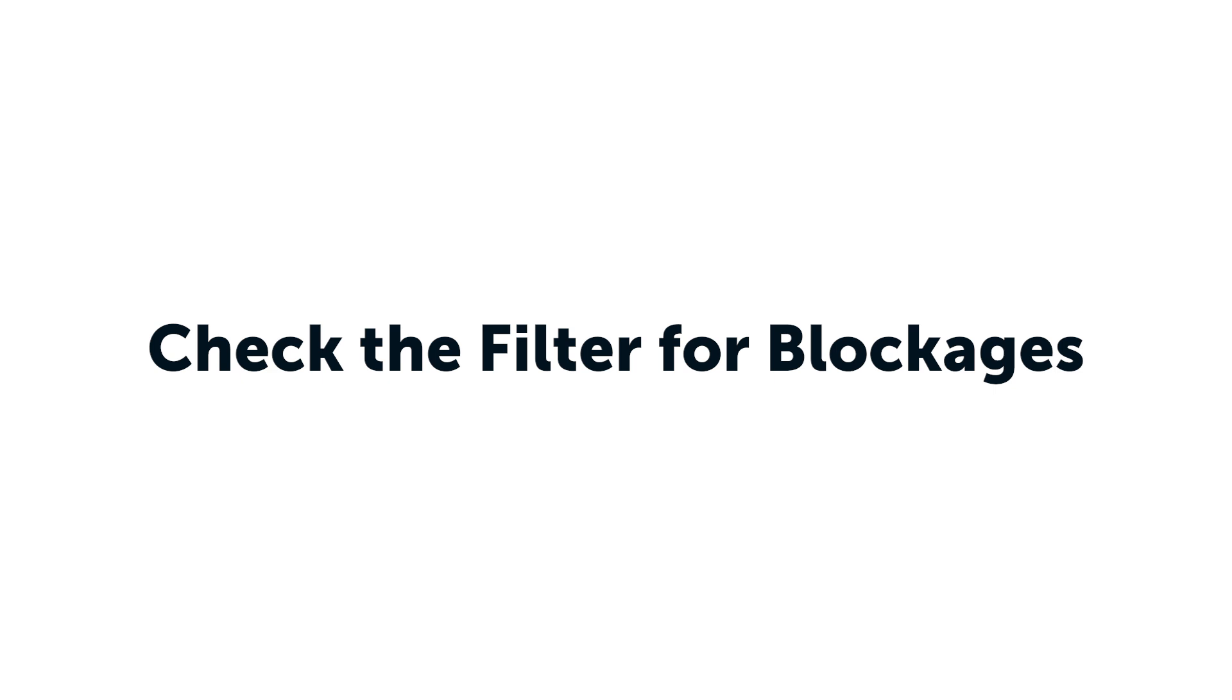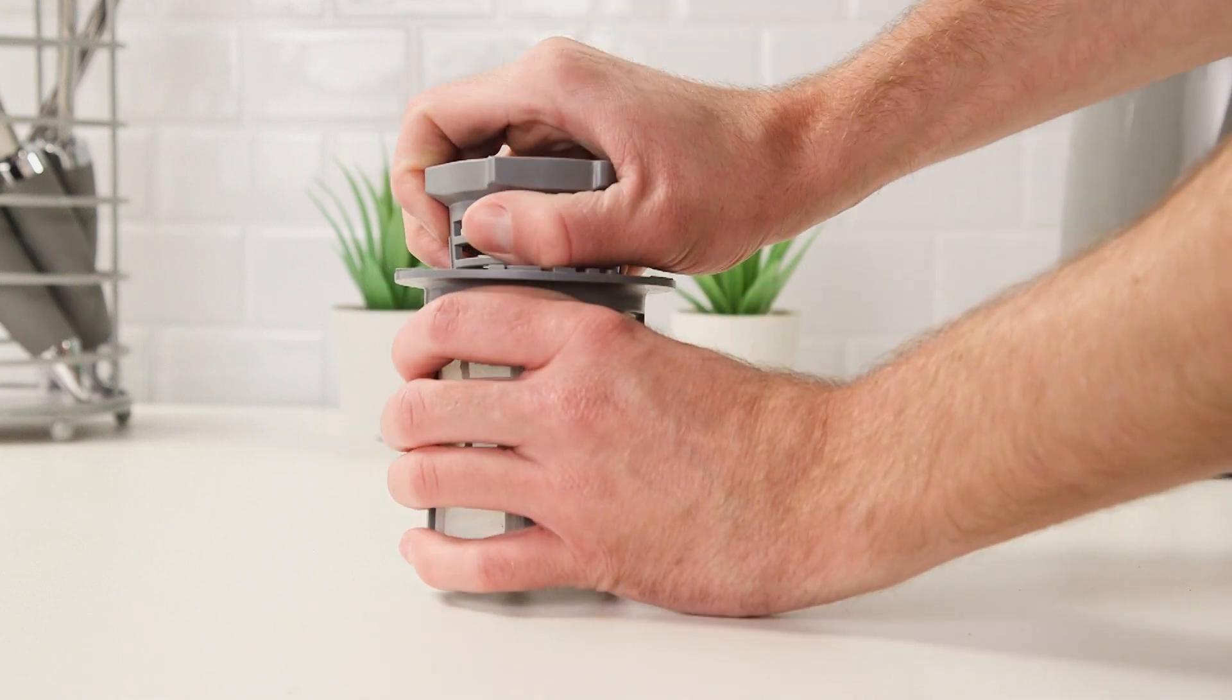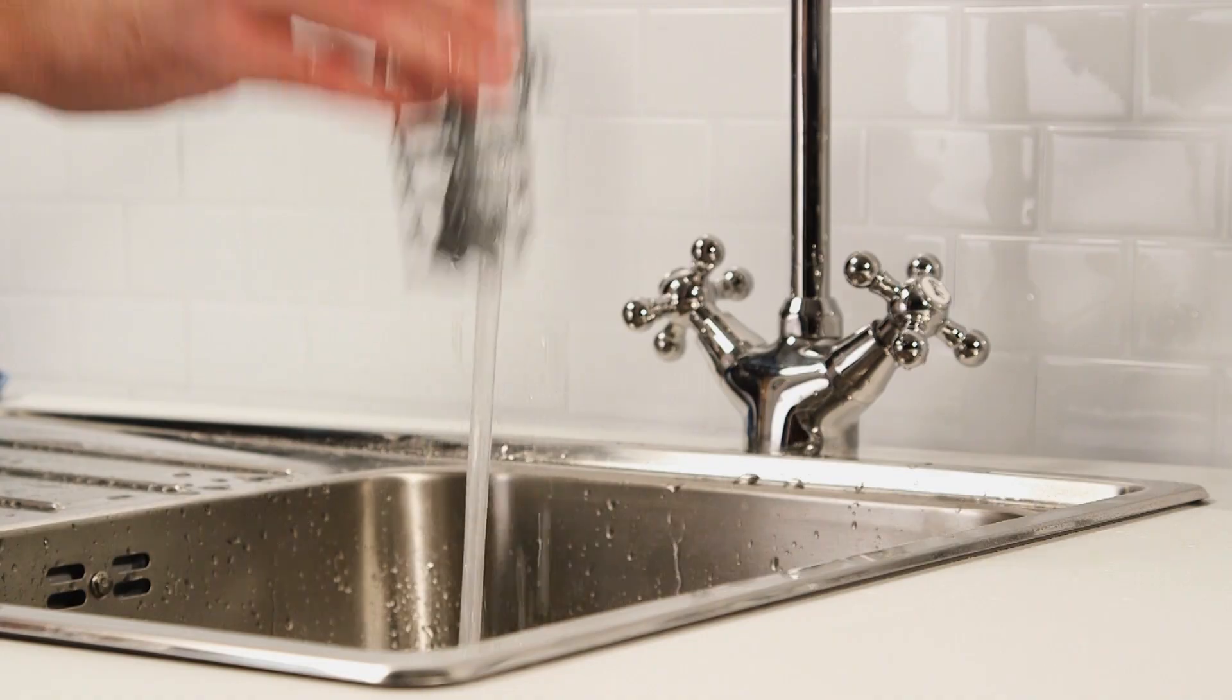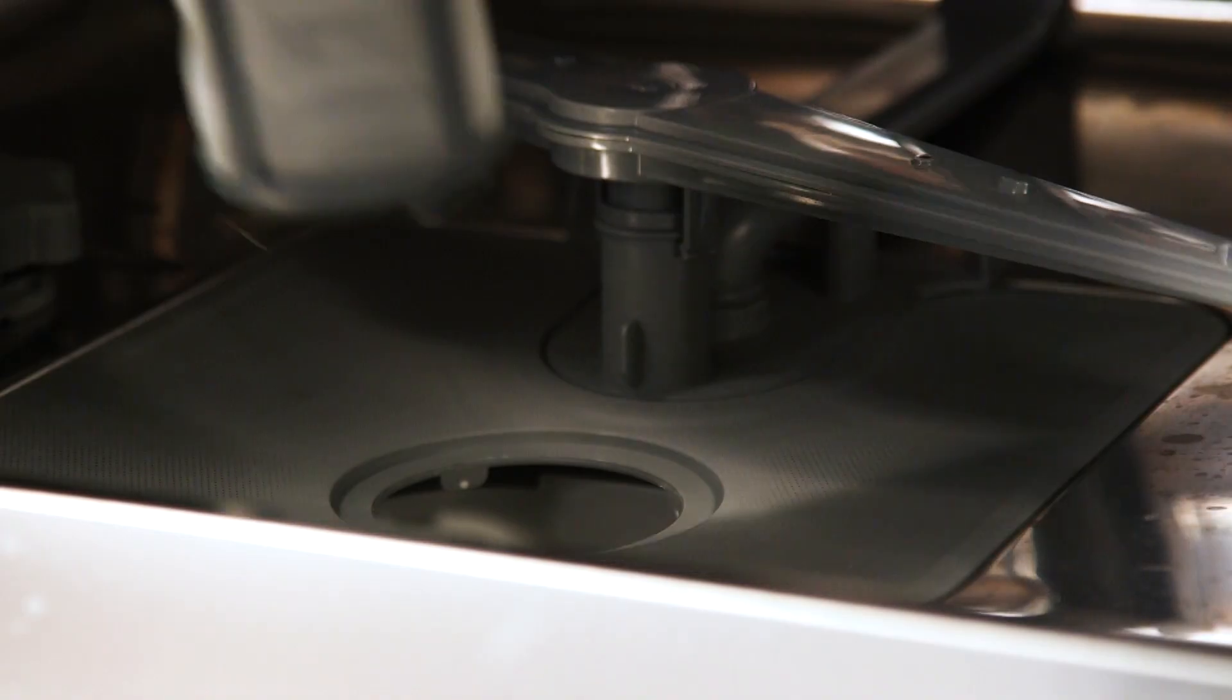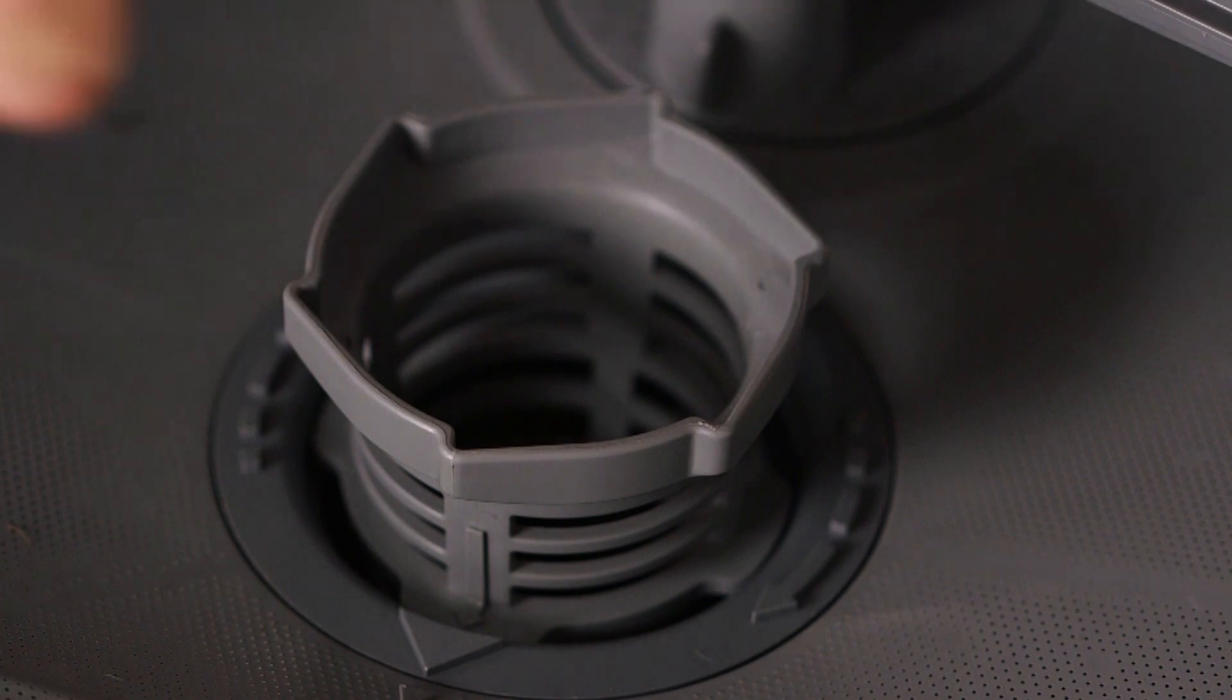Next, check the filter for any blockages. Turn the filter anti-clockwise and pull it away from the dishwasher. Remove the coarse filter and rinse both parts under running water to remove any dirt and debris. Reinsert the coarse filter and turn the filter clockwise to lock it into place.